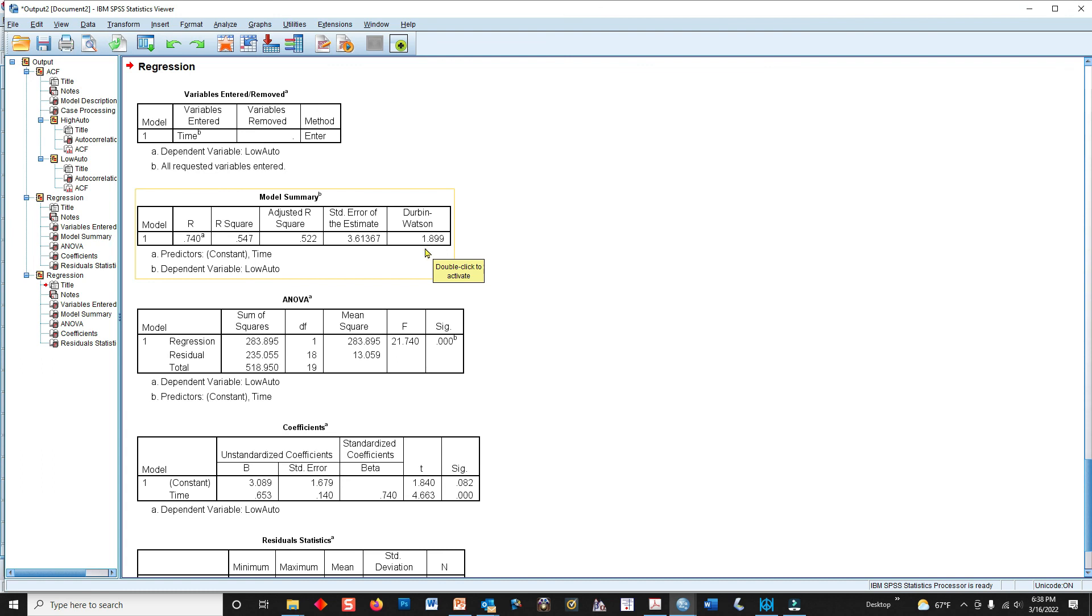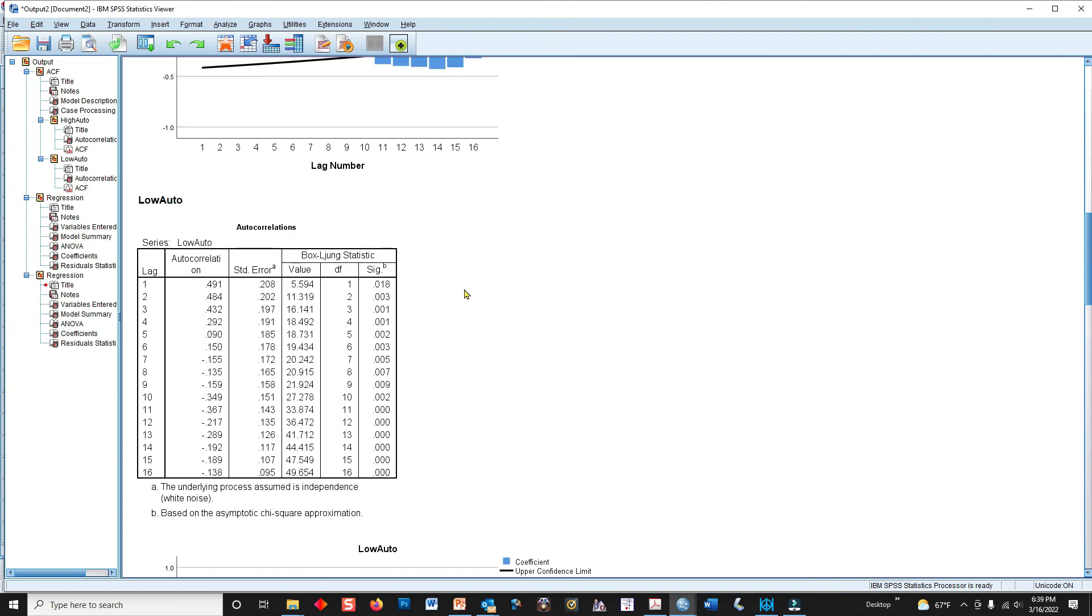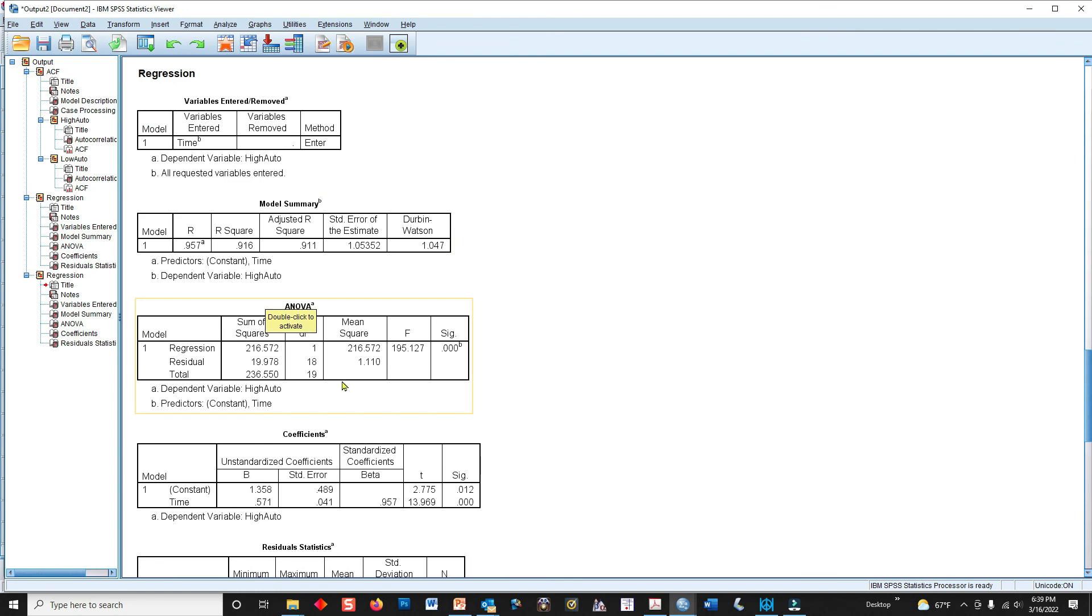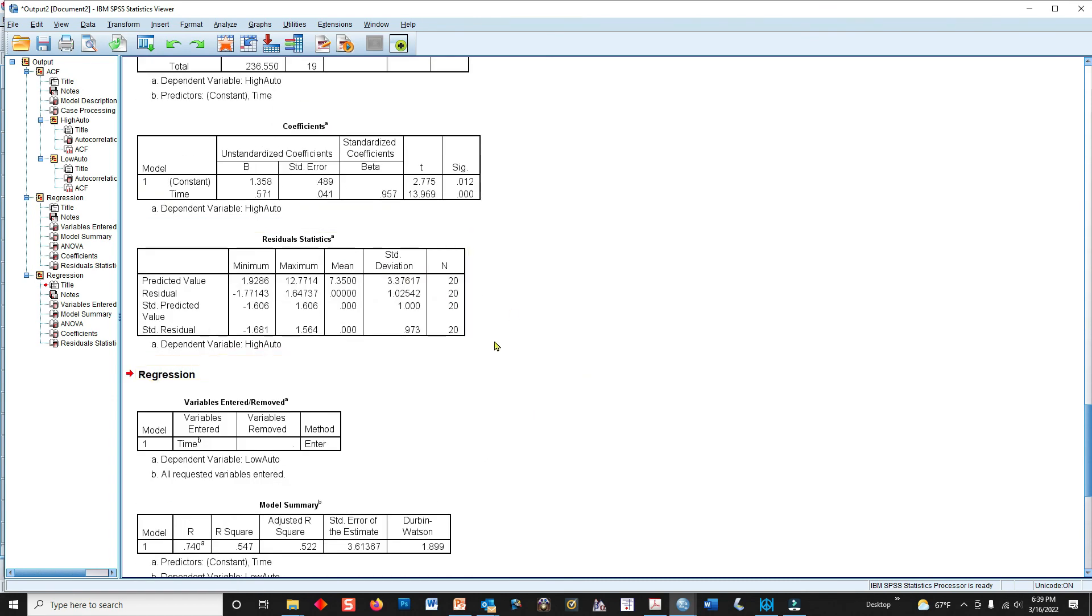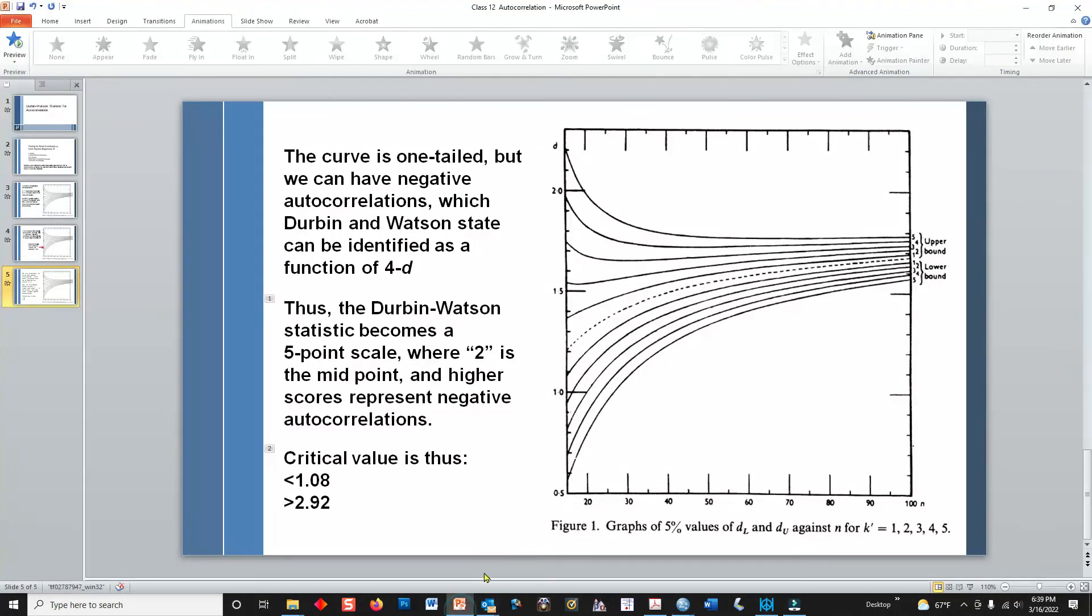If you wanted to report this, I would report both the autocorrelation as well as the Durbin-Watson statistic. The autocorrelation at a single lag. So if you go back up here to the low auto, just report the lag one autocorrelation effect, 0.491. And then it doesn't get a p-value as far as I know. But you would want to also report the Durbin-Watson statistic, and if you feel so inclined, you can cite the original article for Durbin-Watson.